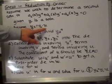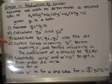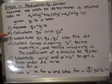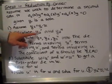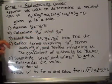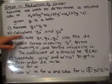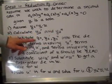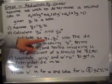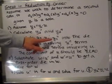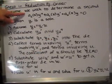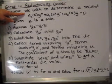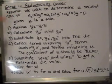We then want to find out what u is. The first step is to calculate y2 prime and y2 double prime, and then substitute y2, y2 prime, and y2 double prime into the original differential equation in an attempt to find u.